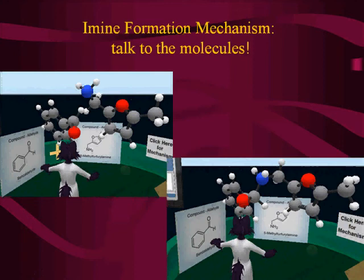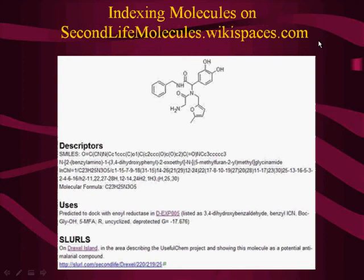We're accumulating this information, and right now there's no search engine that indexes Second Life objects the way Google would. So I've set up the Second Life Molecules Wiki — when we create new molecules, we create a new page. Those pages are indexed by Google, and if someone searches for a molecule, they find the page with SLURLs — Second Life URLs — that take them directly to that specific location in Second Life.